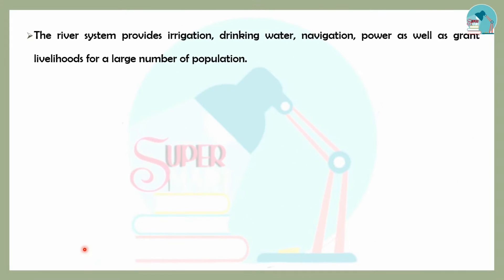In the drainage system, the river system provides irrigation, drinking water, and navigation.